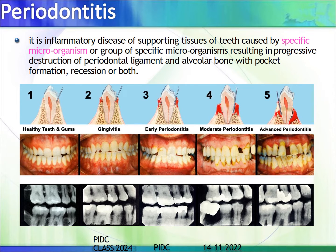Now, the condition of periodontitis: periodontitis is an inflammatory disease of the supporting tissues of the teeth, caused by specific microorganisms or groups of specific microorganisms, resulting in progressive destruction of the periodontal ligament and alveolar bone with pocket formation, recession, or both. You will be learning more about this definition in classes to come and will understand why such specific terminology is used.